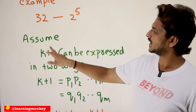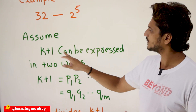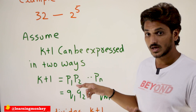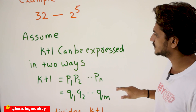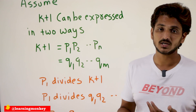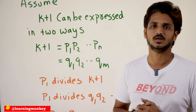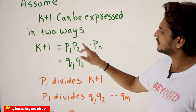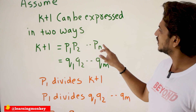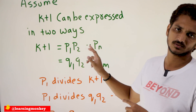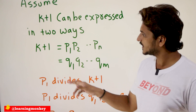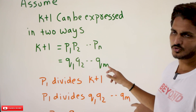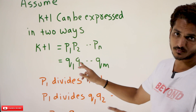Let's try to understand uniqueness mathematically. Assume that we have taken a number k+1, and k+1 can be expressed in two ways — we are assuming that to prove it is not possible. So k+1 can be expressed as p₁ × p₂ × ... × pₙ, where all are prime numbers. Similarly, k+1 can also be expressed as q₁ × q₂ × ... × qₘ, where all are also prime numbers.